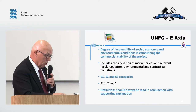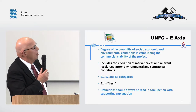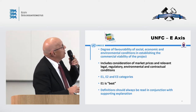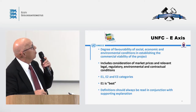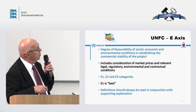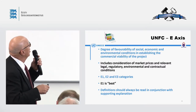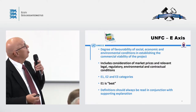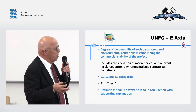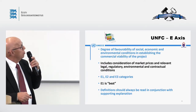The E-axis — the economic axis — is really the strong part of the classification. It focuses on the degree of favourability of social, economic, and environmental conditions in establishing the commercial viability of the project. This includes consideration of market prices and relevant legal, regulatory, environmental, and contractual conditions — whether we own the deposits, what the laws are, whether there are restrictions on land use, and so on. There are three categories: E1, E2, and E3, where E1 is the best.